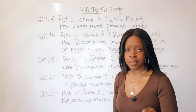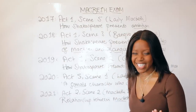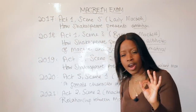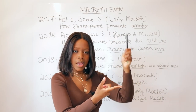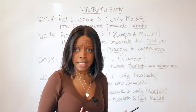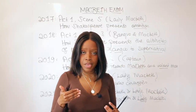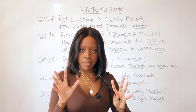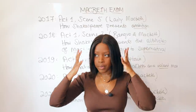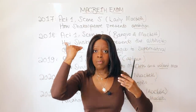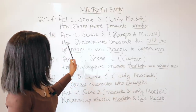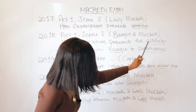The 2018 exam presented an extract from Act 1 Scene 3, right after the witches have prophesied that Macbeth will be Thane of Cawdor and king, and that Banquo's children will be kings. In the extract, Macbeth has just been named Thane of Cawdor and is starting to become ambitious because one of the witches' prophecies has come true. However, Banquo warns him: 'The instruments of darkness tell us truths' — don't trust the witches.